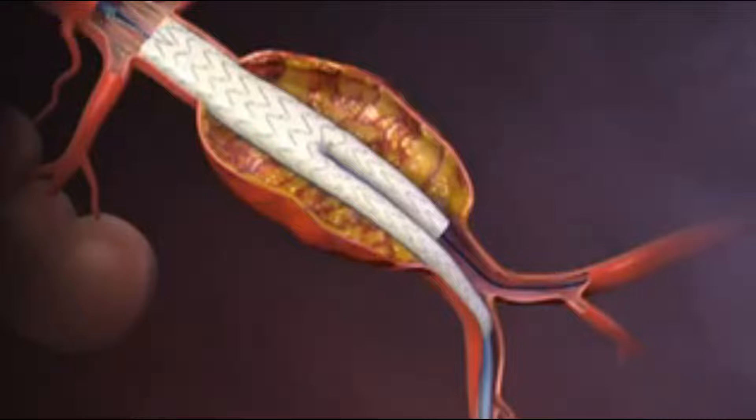The top cap is removed, deploying the suprarenal stent and anchoring the stent graft to the vessel wall. The contralateral limb component of the stent graft is then introduced and deployed